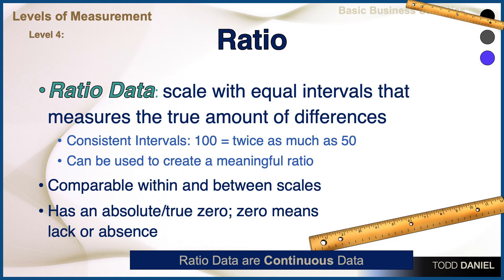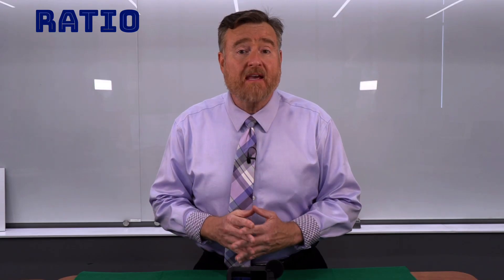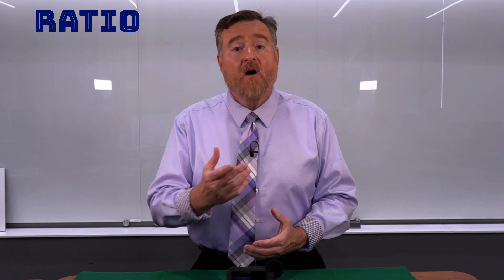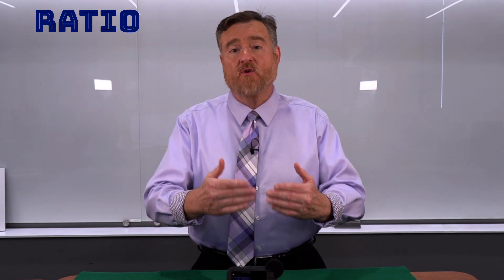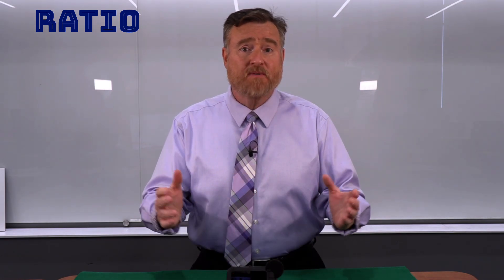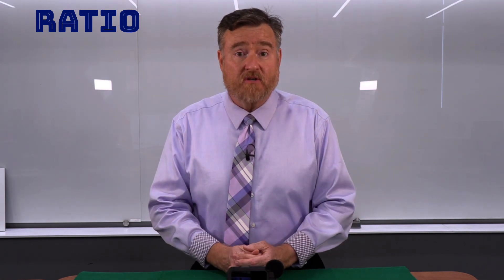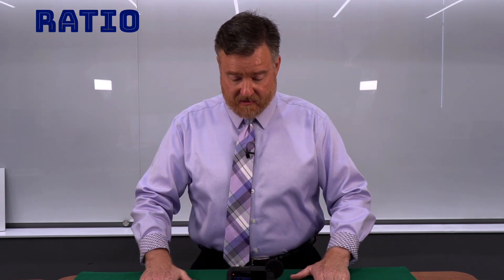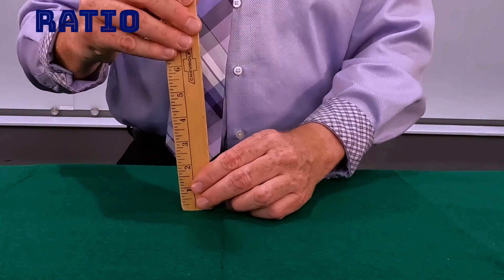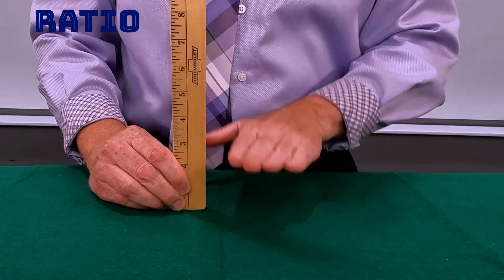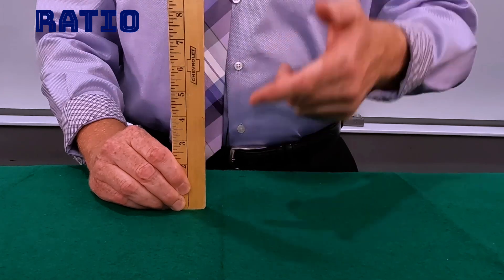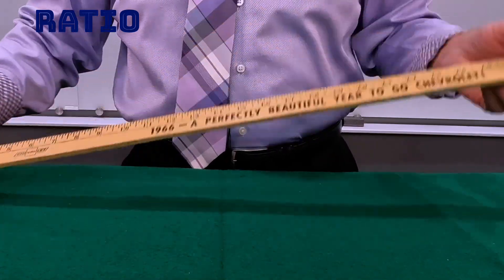Ratio data have a scale with equal intervals that measures the true amount of differences, which means that zero must indicate a complete absence of the thing being measured. The measure of temperature that has an absolute zero is called Kelvin — you cannot have a value less than zero on a Kelvin scale; absolute zero represents the absence of molecular motion. Other more common measures like height or weight also have an absolute zero. If we start with this surface as our starting point and use a yardstick to measure height, this surface is always zero — all numbers come up from here, and we cannot have negative values.